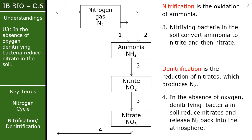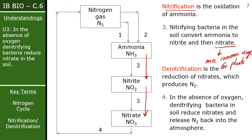The third step is nitrification: converting NH₃ ammonia into nitrite and eventually into nitrate. Nitrate is the more common usable form for plants. The final step to return nitrogen to the atmosphere is denitrification — converting nitrate back into nitrogen gas, which is the reverse of nitrification. This often occurs in pockets beneath the soil where there is an absence of oxygen, releasing nitrogen gas back into the atmosphere.